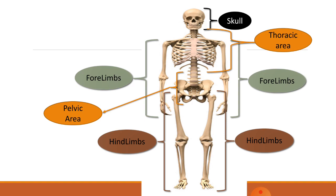In summary: the skull protects our brain; the thoracic area protects our heart, stomach, lungs, and other major organs; the forelimbs support our movement, writing, eating, and other processes; the hind limbs support our walking and running; and the pelvic girdle is the central portion that connects the whole skeleton. Thank you for watching — please subscribe to the channel, like, and share. Click the bell icon to get more important videos.